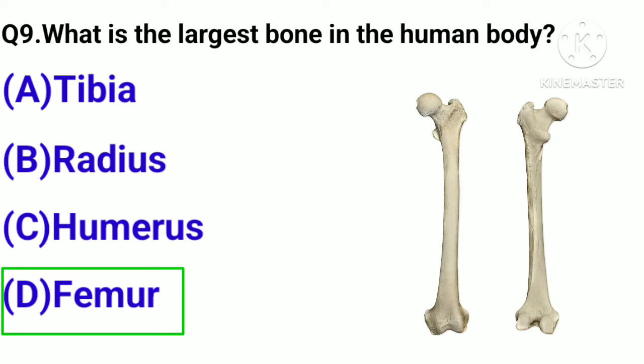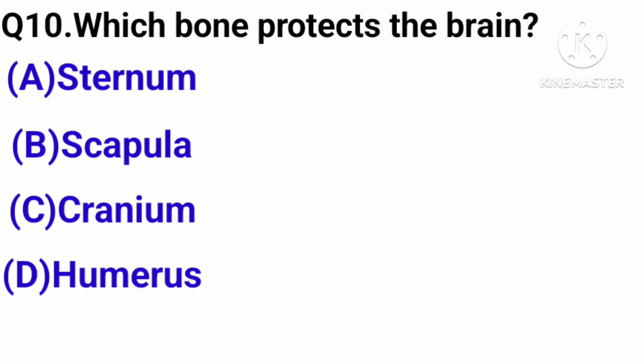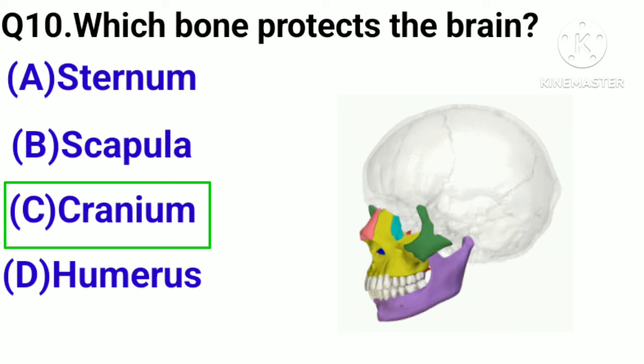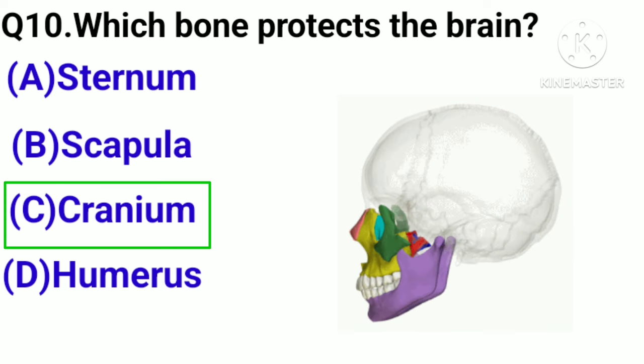Question number 10. Which bone protects the brain? Option A, Sternum. B, Scapula. C, Cranium. D, Humerus. Correct answer: Option C, Cranium.